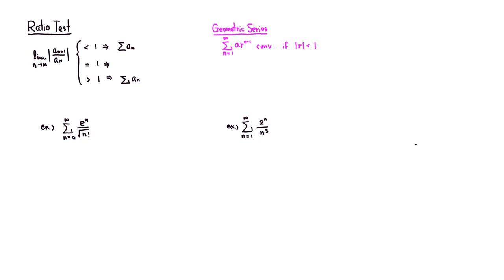We're going to take the ratio between two consecutive terms — in this case a_{n+1} over a_n — then take the absolute value. Then we're going to take the limit of that as n approaches infinity, because if you're interested in the convergence or divergence of a series, you're interested in the later terms. The terms in the beginning don't really make any difference, but the terms toward the end make a big difference.